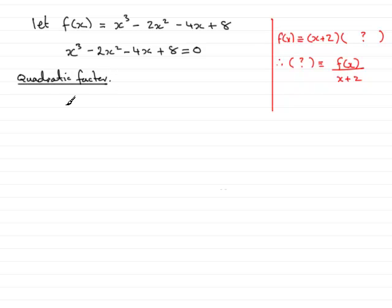So for the quadratic factor, what I need to do is divide x plus 2 into the cubic expression here for f of x, x cubed minus 2x squared minus 4x plus 8, and do long division. So how do we do long division? Well, first of all, just say, what do I multiply x by to get x cubed? And that would be x squared.